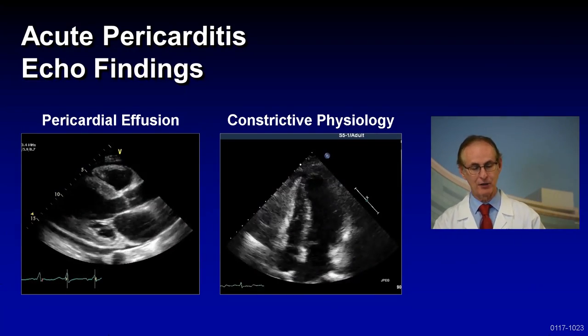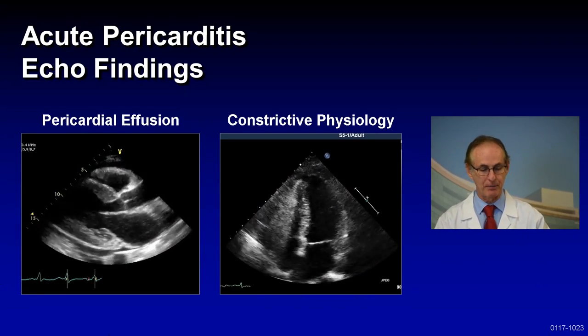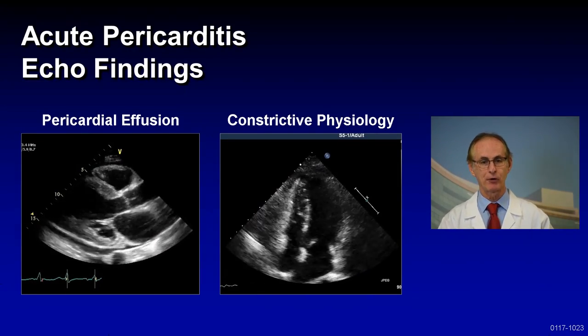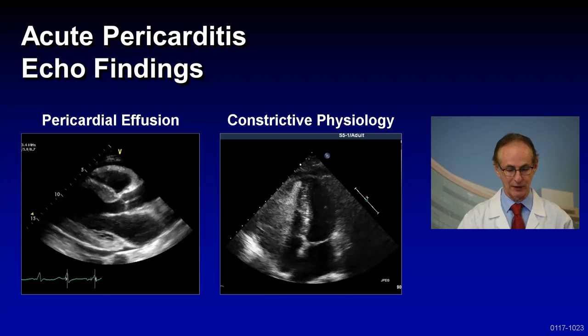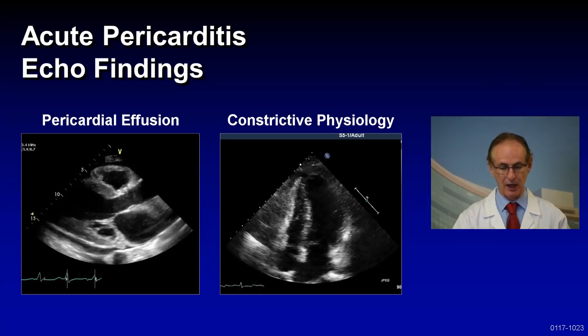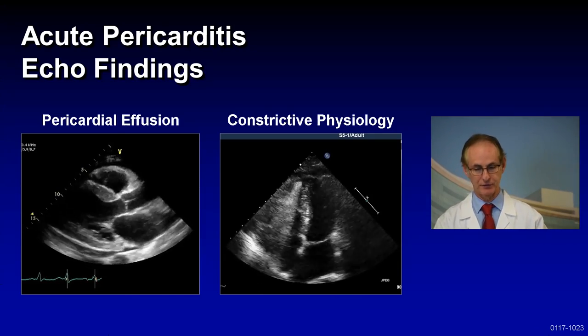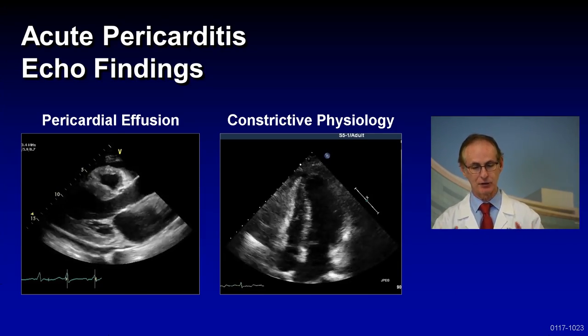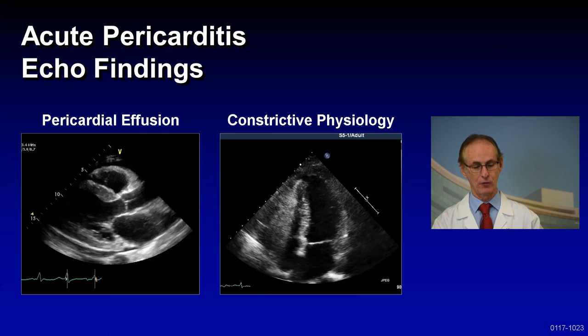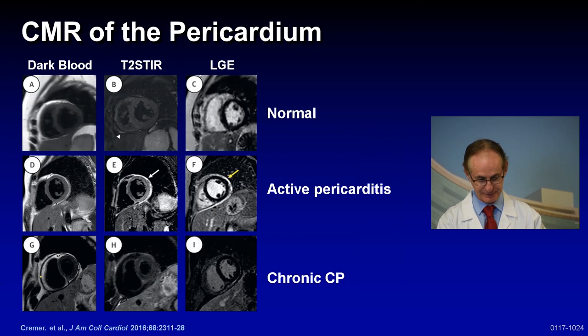Here's an echo showing a moderate pericardial effusion on the left and constrictive physiology on the right — this is how echo can be used for these types of cases.